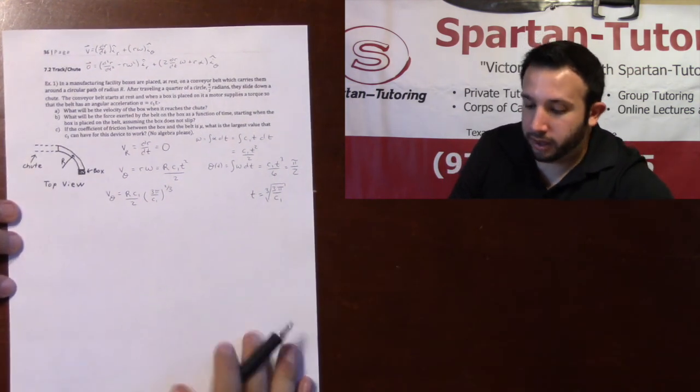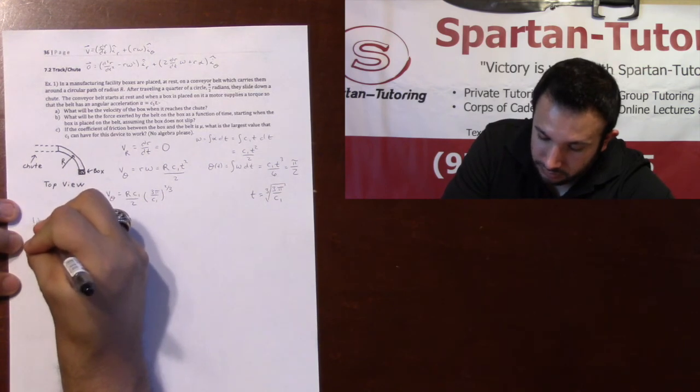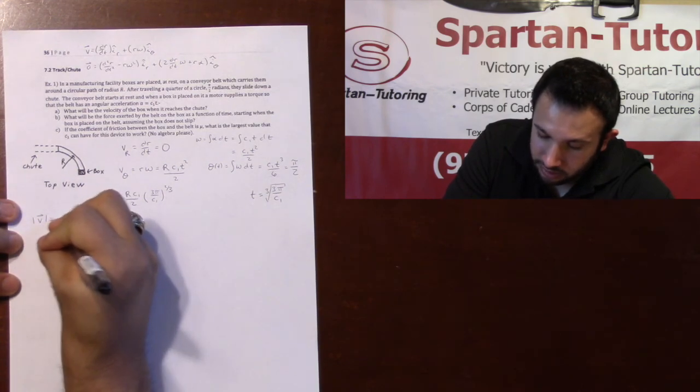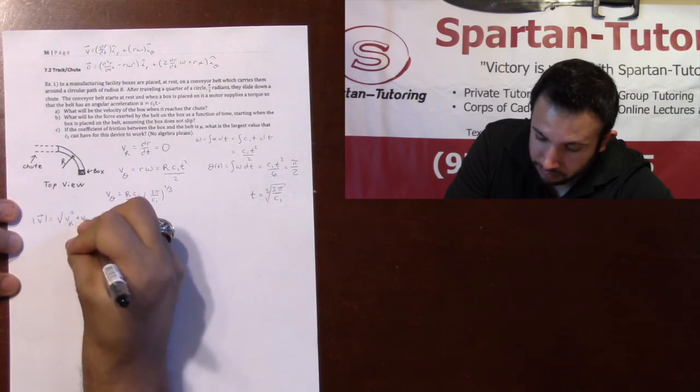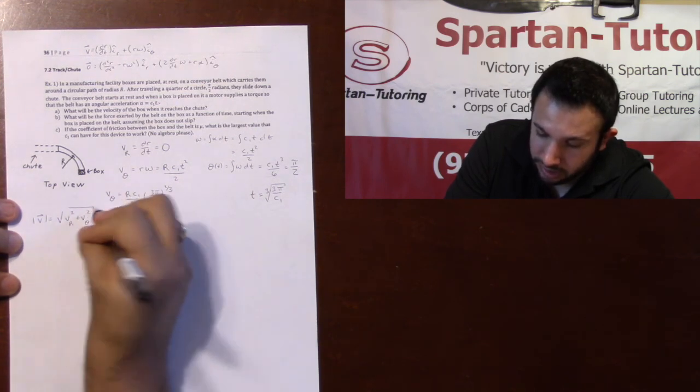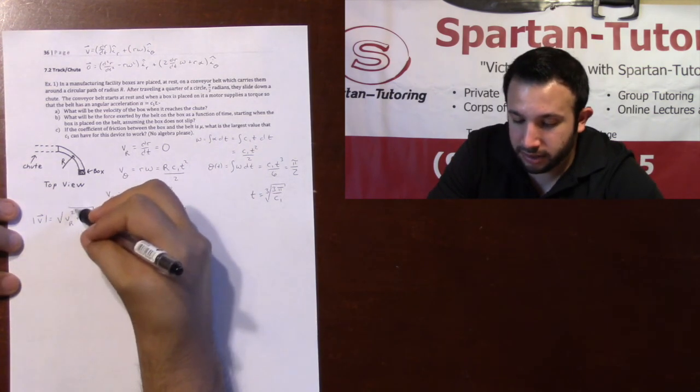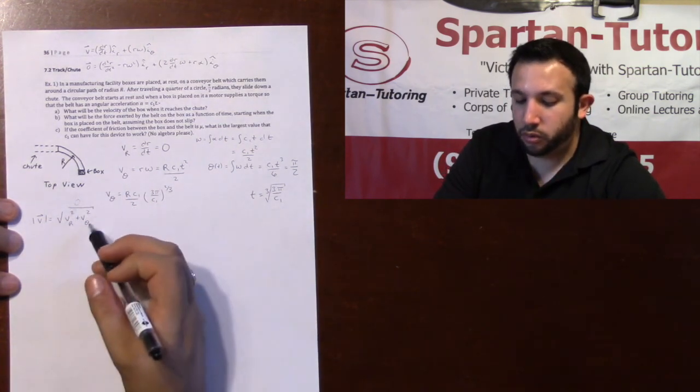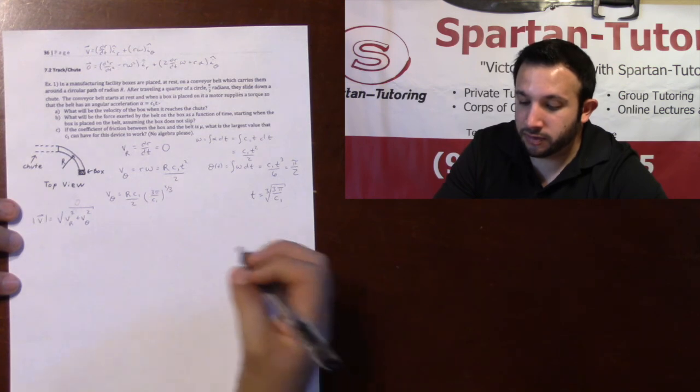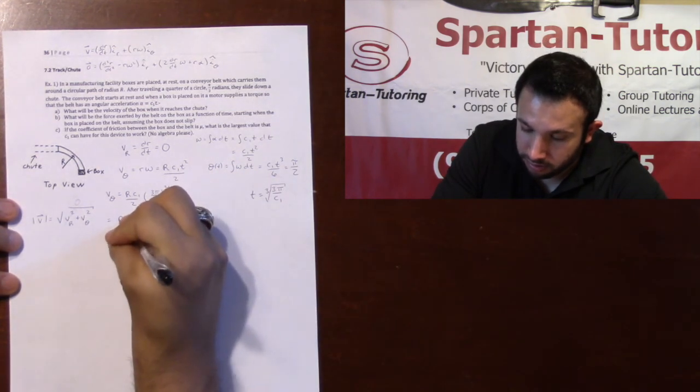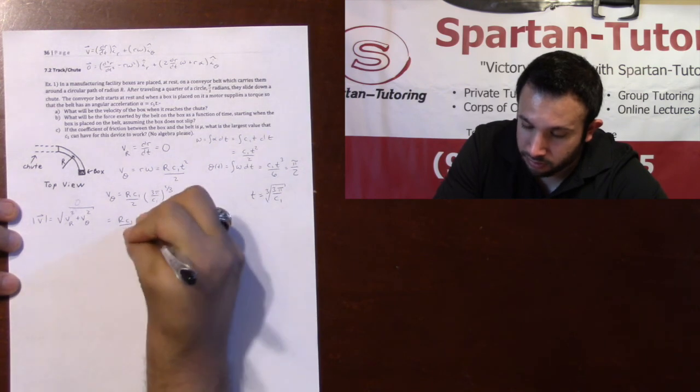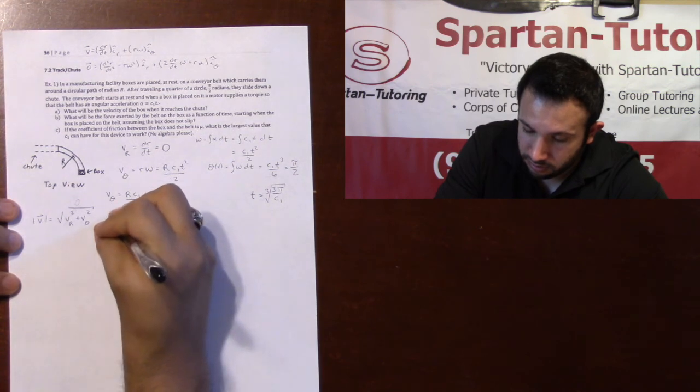If you want your total velocity, magnitude of your total velocity would be the square root of your vr squared plus vθ squared. However, since our vr is 0, the square root of vθ squared is simply just vθ. So it's just equal to r c1 over 2 times 3 pi over c1 to the 2 thirds.